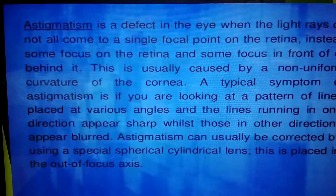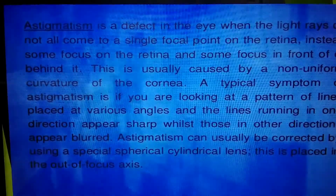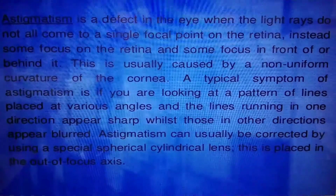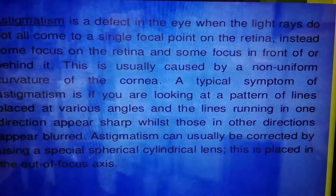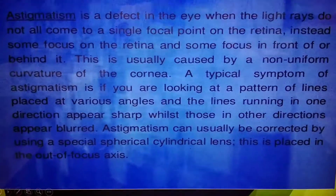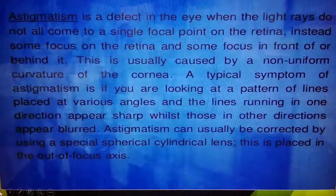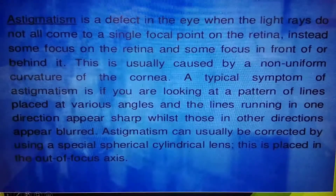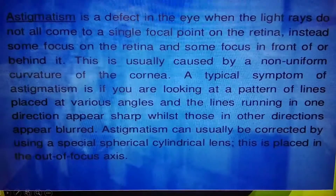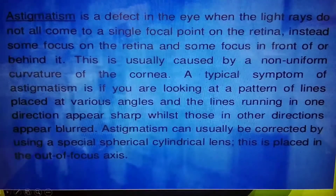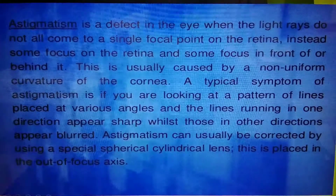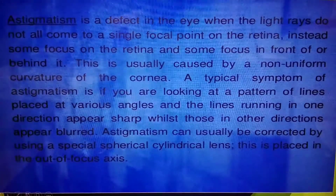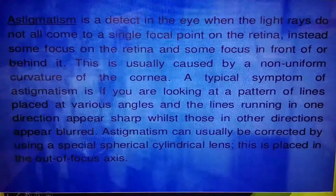Next is astigmatism. Astigmatism is a defect when the light rays do not all come to a single focal point on the retina. Instead, some focus on the retina and some focus in front of or behind it. This is usually caused by a non-uniform curvature of the cornea.